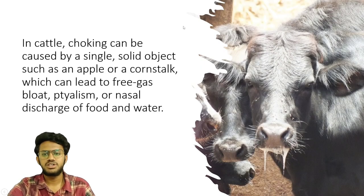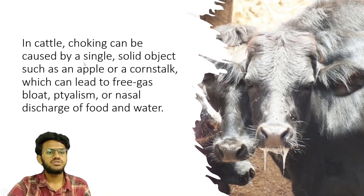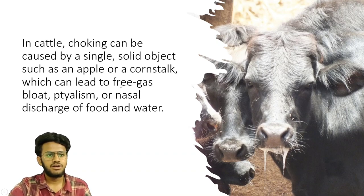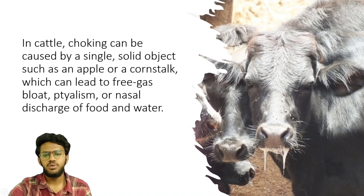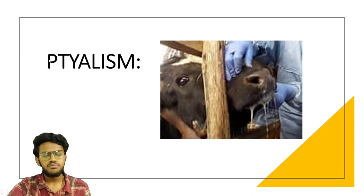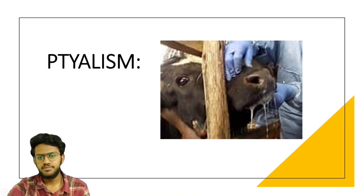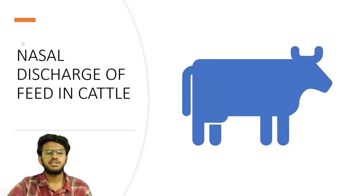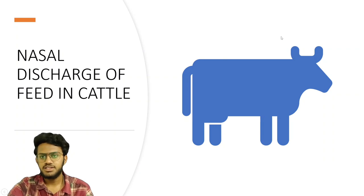In cattle, choking can be caused by a single solid object such as an apple or corn, leading to free gas bloat, ptyalism, and nasal discharge of food and water. You are looking at an image of cattle showing gas bloat. Ptyalism means excessive discharge of saliva from the mouth and nasal cavity.